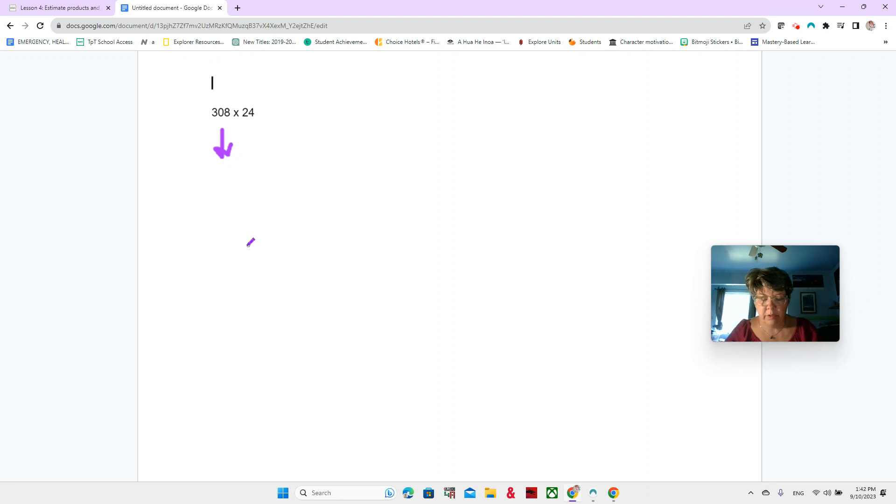Okay. Maybe you would change the 308 to a 300, because this is a zero. So that tells us that we're very close to 300. And maybe change our 24 to 20. I think that's probably the easiest, round both of them. This one to the closest 100, this one to the closest 10.